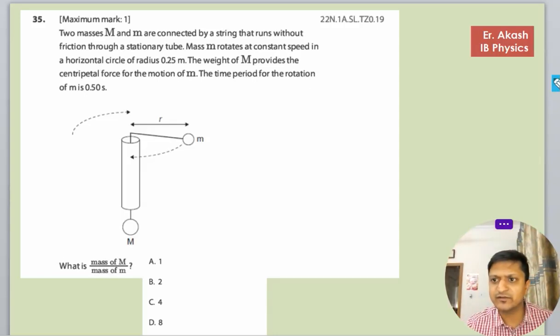The question says that two masses, M capital and small m, are connected by a string that runs without friction through a stationary tube.